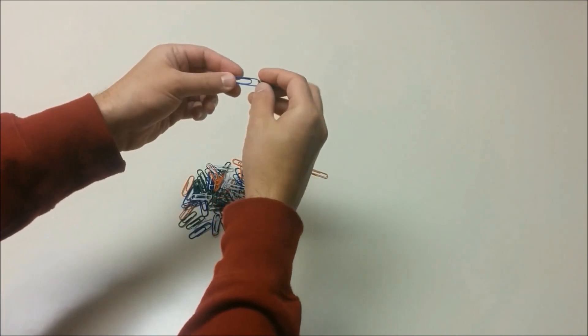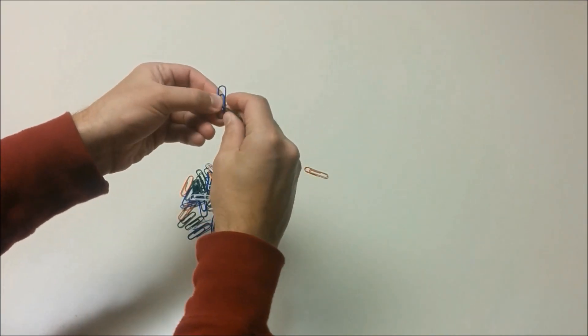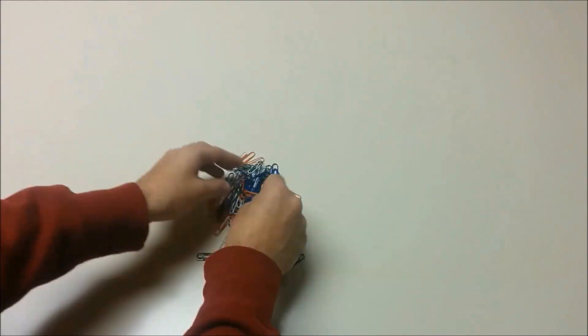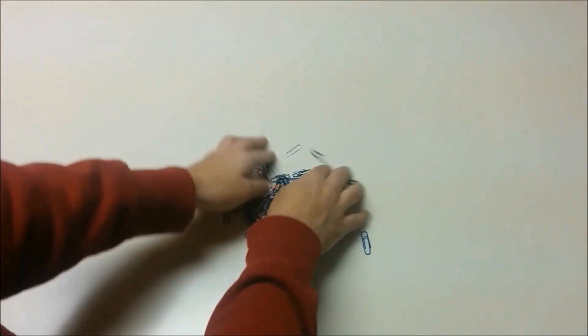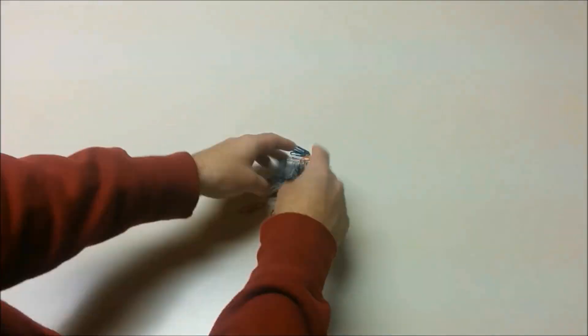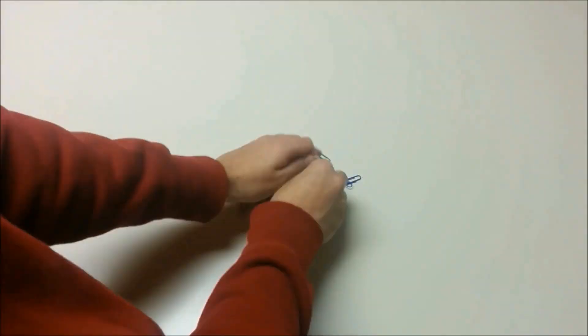We'll repeat the experiment by selecting 2 paperclips at random, and joining them into a chain. We'll repeat this experiment over and over again, each time joining paperclips into chains if we select them randomly.